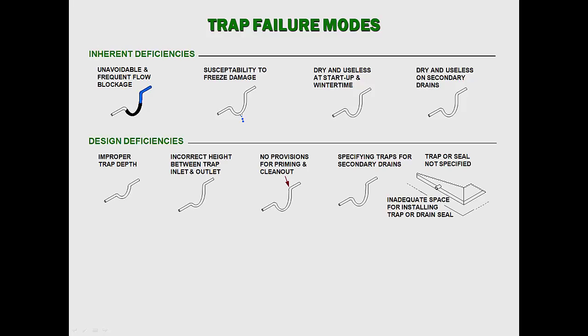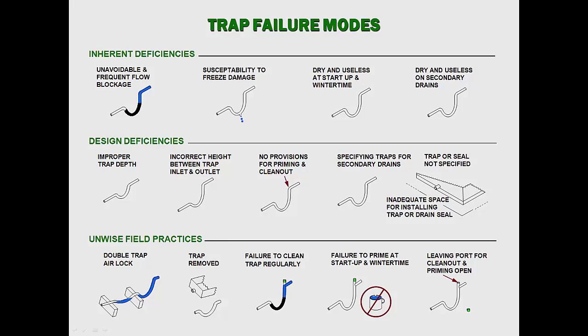Design deficiencies of traps include improper trap depth, incorrect height between trap inlet and outlet, no provisions for priming and clean-out, specifying traps for secondary drains, trap or drain seal not specified, or inadequate space for installing a trap or drain seal. Unwise field practices include double-trap airlock, trap removed, failure to clean trap regularly, failure to prime at start-up and wintertime, and leaving the port for clean-out and priming open.